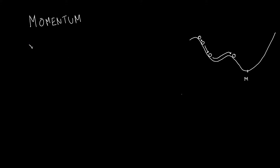First of all, we define a variable that we are going to call vt as velocity. We define a Greek letter that will multiply the Vt-1. This Greek letter represents the importance of the last value of our velocity. So if you give a lot of importance to this value, the ball will be accelerated much more. And then we add our learning rate as we've done before, multiplied by the gradient.